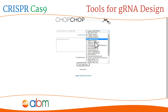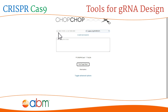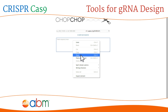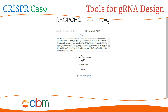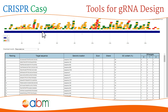Select the species of interest from the drop-down menu. Species-specific gene IDs, genomic coordinates, or entire nucleotide sequences can be cut and pasted in for analysis. Once the analysis is done, a graphic representation of the sequence will be provided.